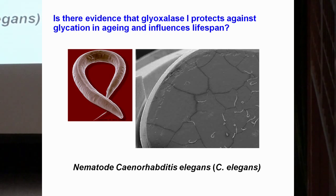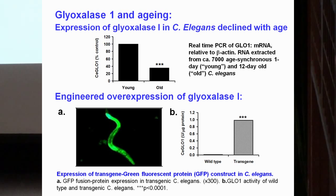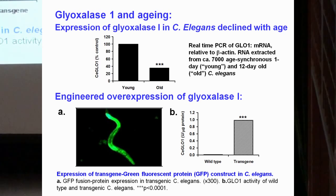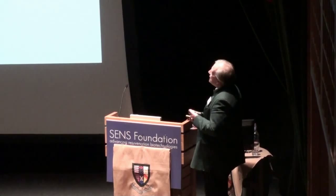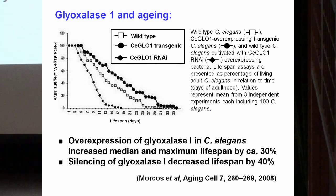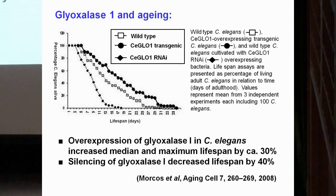We did work by collaboration on the C. elegans model. Michael Morkos in Heidelberg did most of the work with the worms. Glyoxalase I expression declines in rather old C. elegans of 12 days. Overexpression of glyoxalase I increased median and maximum lifespan by about 30%, and silencing decreased lifespan by 40%. This was the first time dicarbonyl glycation protection had been linked to a longevity effect, and now we think of glyoxalase I as a vita gene.